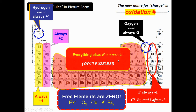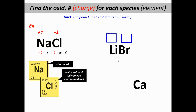Let's try a couple of examples. Here's NaCl — sodium is always plus one. The way we figure these out is that the charges in a compound have to add up to zero. So plus one from sodium means chlorine must be minus one. Plus one and minus one add up to zero. We figured out sodium and chlorine.